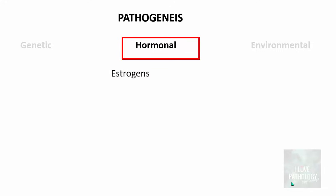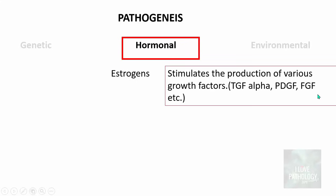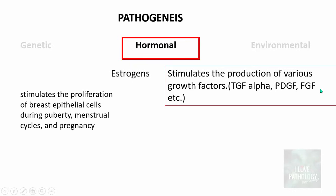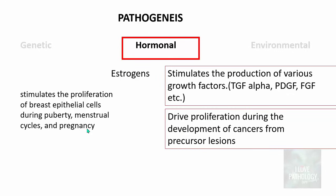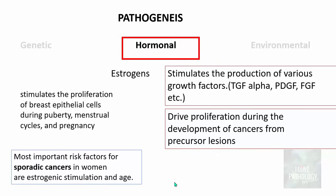Moving on to hormonal factors: the most important hormone implicated is estrogen. Estrogen stimulates production of growth factors including transforming growth factor alpha, platelet-derived growth factor, and fibroblast growth factor, which stimulate proliferation of breast epithelial cells during puberty, the menstrual cycle, and pregnancy. Estrogen also drives proliferation during cancer development from precursor lesions, helping progression to full-blown malignancy.